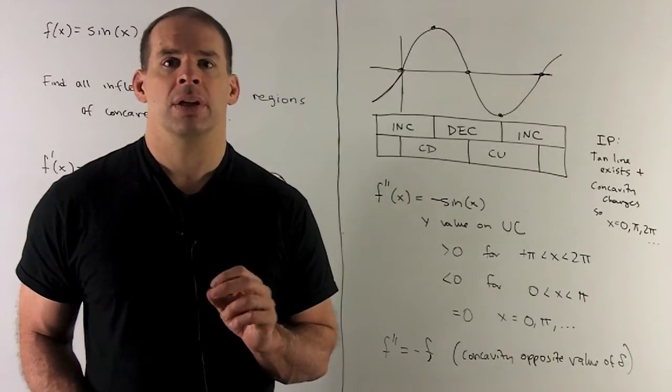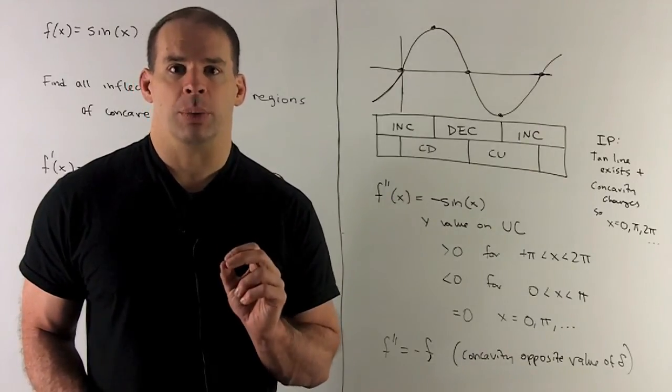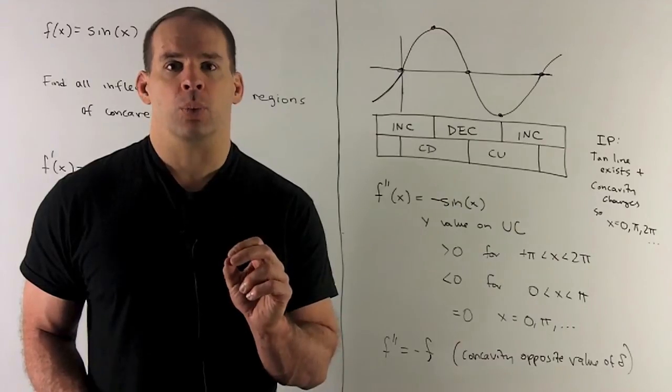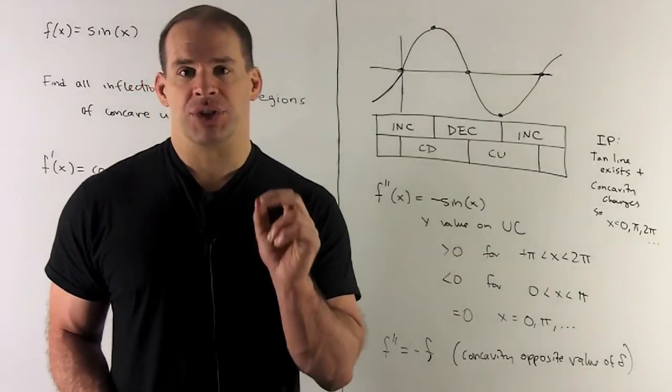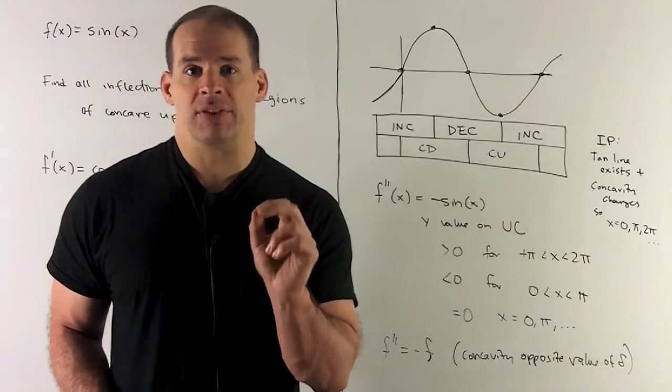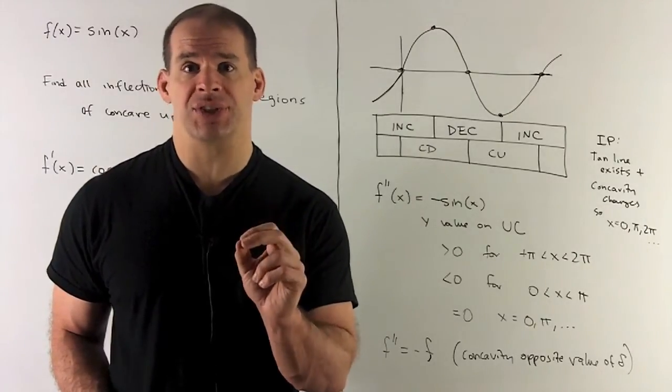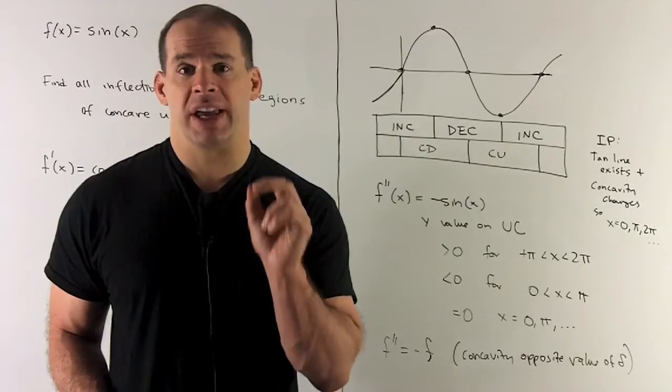How about inflection points? So where do we find our inflection points? For an inflection point, we'll need the first derivative has to exist. So that means there's a tangent line somewhere. It doesn't have to be horizontal, it just has to exist. Then we want to change in concavity.